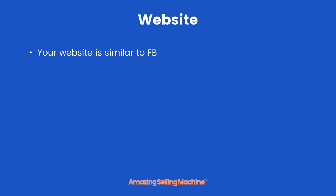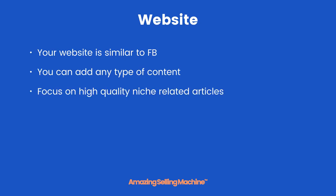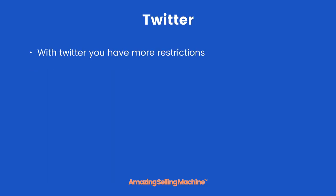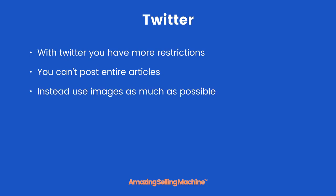Your website. Essentially your website is similar to Facebook — you can add any type of content. However, you should focus on high quality niche-related articles and add separate pages for your products too. On those pages include a purchase link that goes to your listing — in other words, use a link saying 'click here to buy this' and whatever the product is.